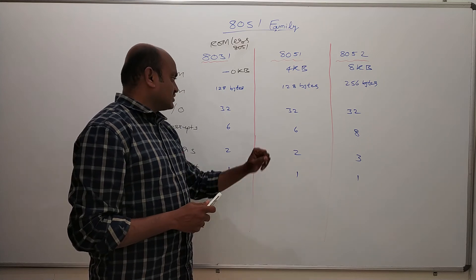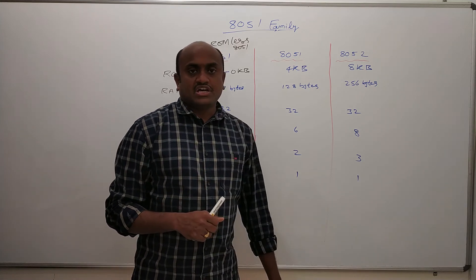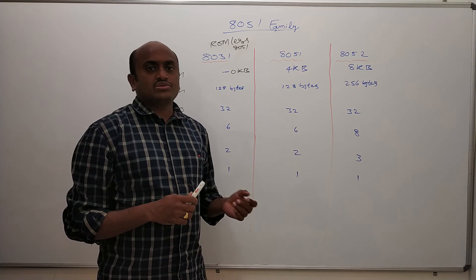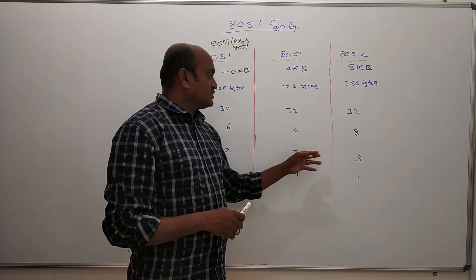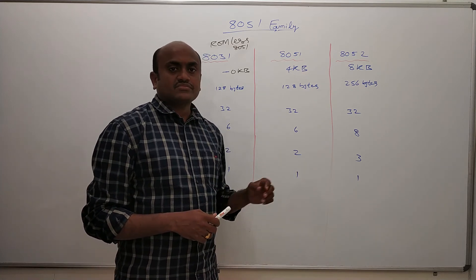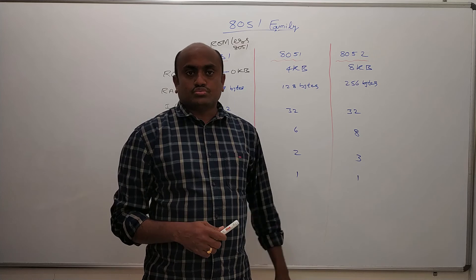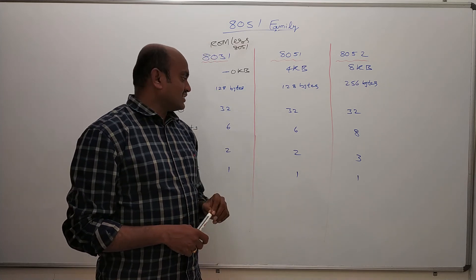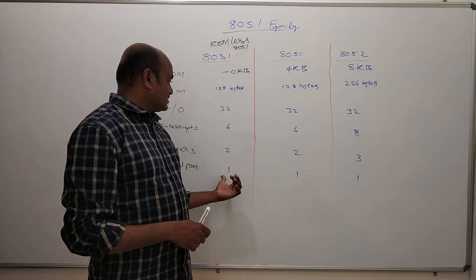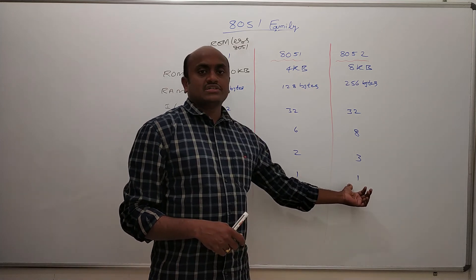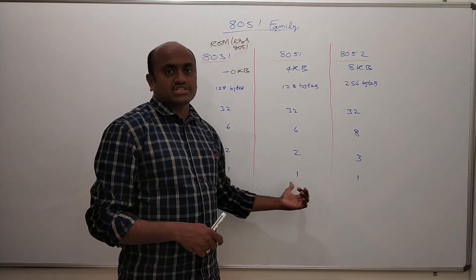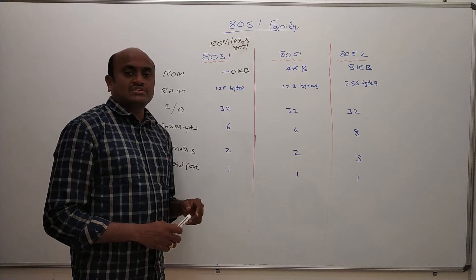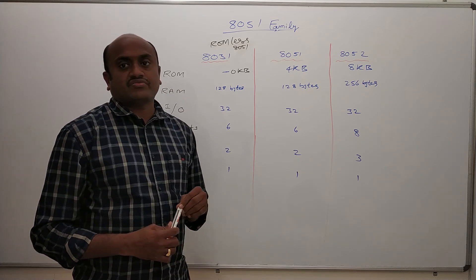Now coming to the timers: there are 3 timers in the 8052. Apart from timer 0 and timer 1 which are available in the 8051, a third timer — timer 2 — is added. So there are 3 timers in total. The serial port remains 1 across all three devices, which is a UART. That covers the 8051 family of microcontrollers.